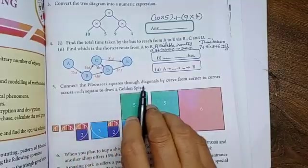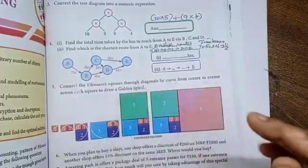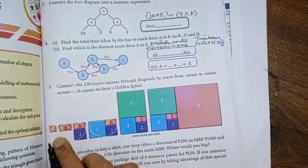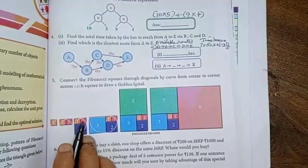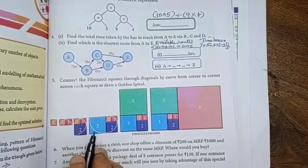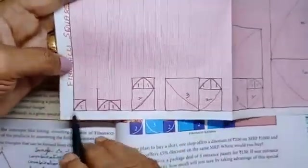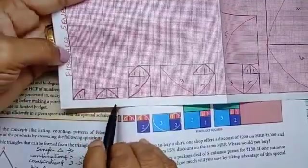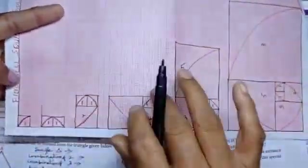Next, if Fibonacci squares through diagonals by curve from corner to corner across each square to draw a golden spiral. Like this. Here, 1 to 1. Then, next, 1. 1 to 1, 2. Then, this side also, 2. Next, 1 to 3, you know. This side. So, this side also, you add another 3. Like this. We see the here. Here, what? 1 to 1. Next, 1 to 1. Here, 1, 2. Next, this one. Like this, you draw. Take graph sheet and draw.